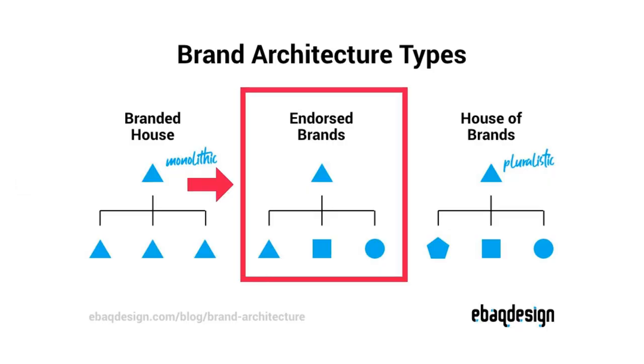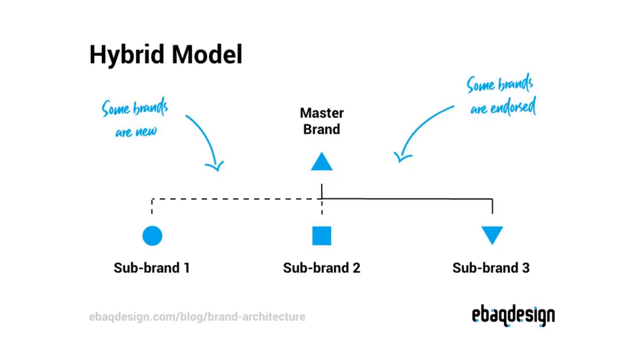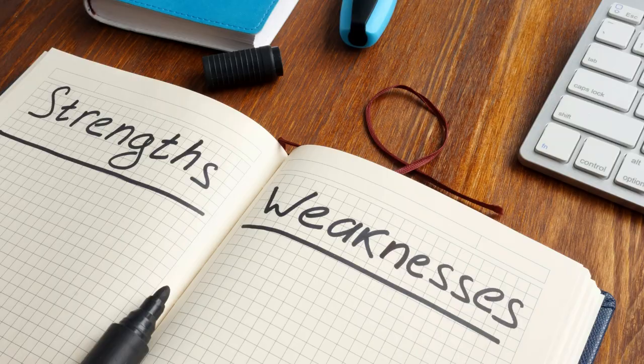There are three basic models: branded house, endorsed brands, and house of brands. They can all help us decide how to arrange our brands within one company, each in a different way. Besides these, there's also a fourth hybrid model which is just a mix of the above. Each type of brand architecture comes with some strengths and weaknesses, which we're going to discuss later. So first let me give you a quick overview of those brand architecture types, and then we will discuss different benefits and I'll give you more examples.